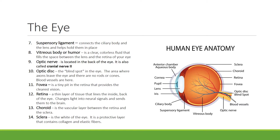The fovea is a tiny pit in the retina that provides the clearest vision. The retina is a thin layer of tissue that lines the inside back of the eye; it changes light into neural signals and sends them to the brain for interpretation. The choroid is the vascular layer between the retina and the sclera. The sclera is the white of the eye — a protective layer that contains collagen and elastic fibers.